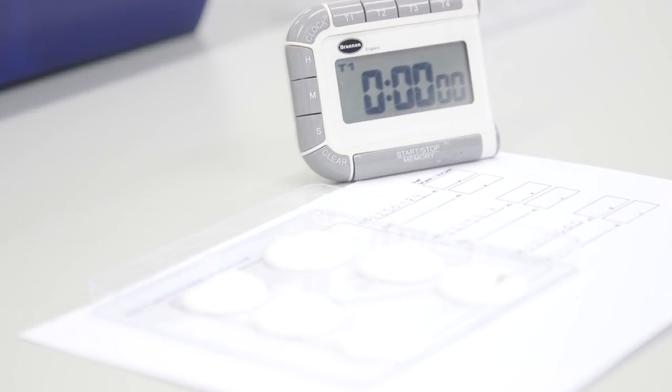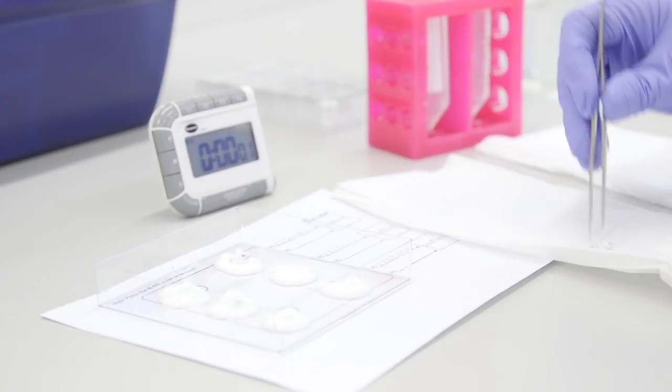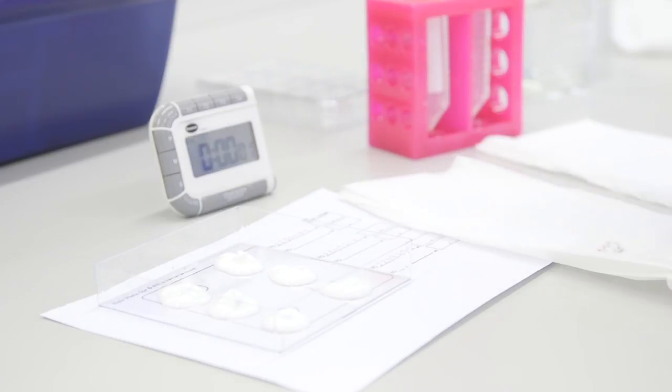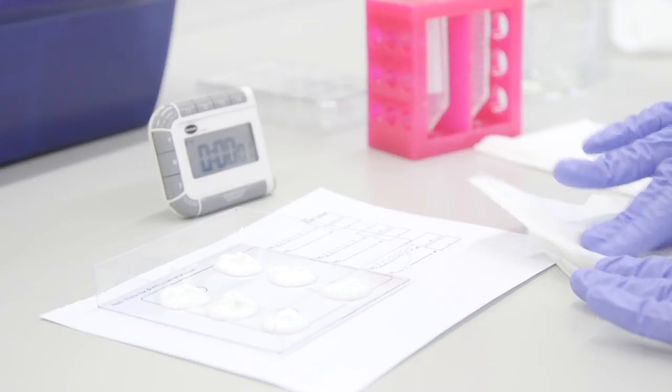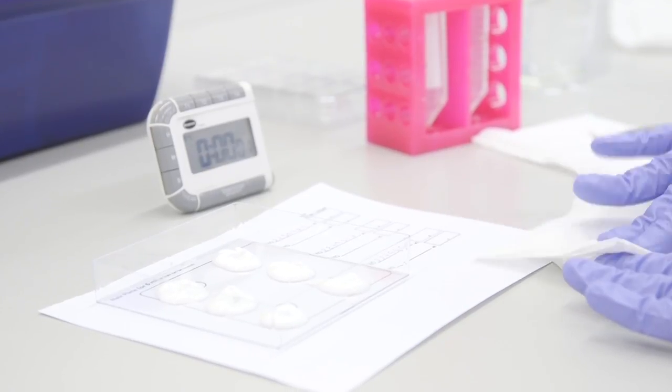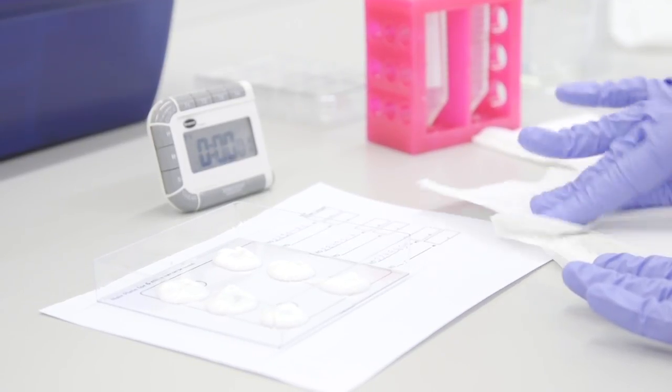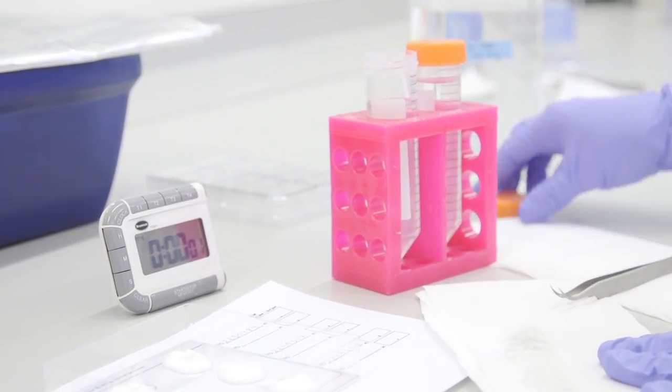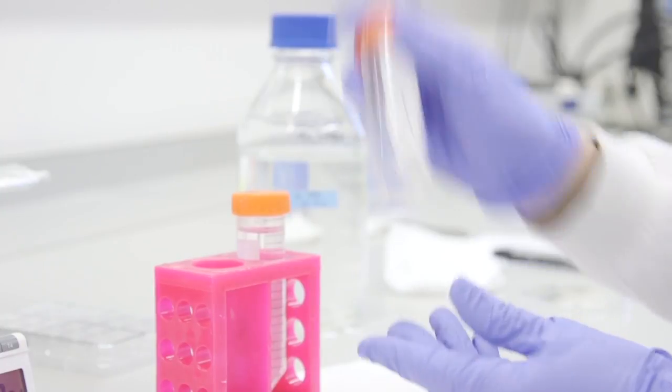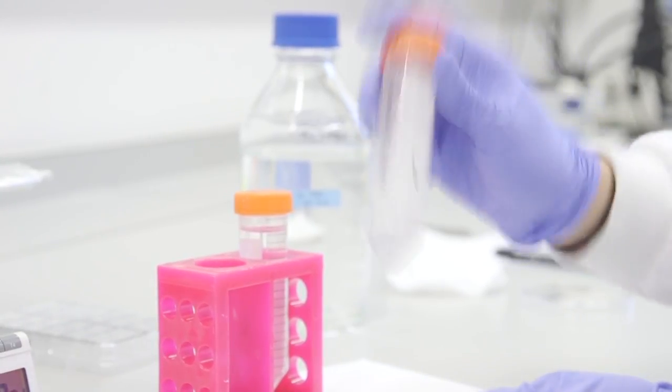When the 4 minutes are up, transfer the ears from the hair removal cream to a tissue. Using the tissue, gently rub the ear to remove the majority of the cream. Be careful not to squash the ear by rubbing too vigorously. Place the ears into a 50ml tube filled with PBS at pH 7.4 and shake to wash off any remaining cream.